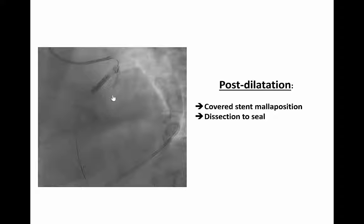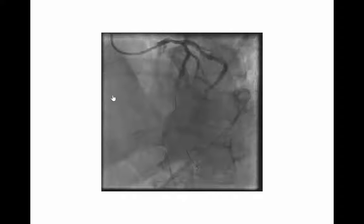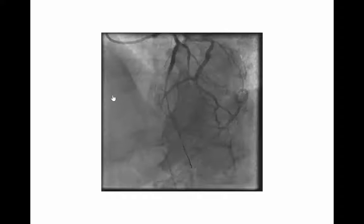So the first thing you have to do is to perform a post-dilatation with a balloon. That was done with a 3.5 balloon in the proximal LAD and mid LAD, and a 3.0 balloon in the LAD with low inflation. Thanks to that, the perforation stopped and the dissection is sealed. And finally, you can see there is a good result, and the patient recovered very well without any sequelae.